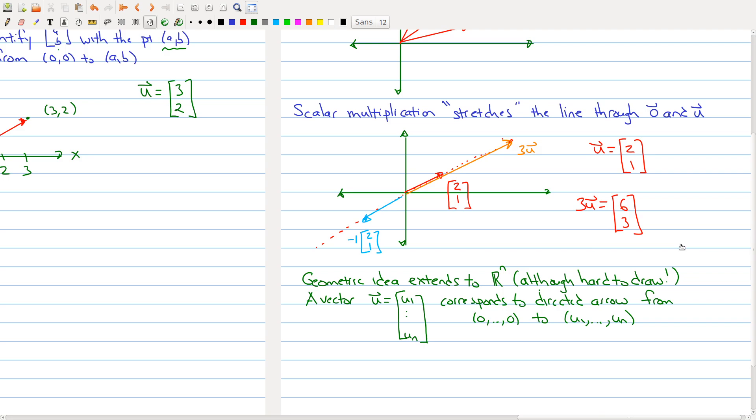The problem is it becomes extremely hard to draw, partly because it's really hard to visualize 4 space, 5 space, and so on. But you can kind of see what is happening is that we would be taking a vector u, and a vector u now because it's a vector in Rn would have n different entries. And we could think of that as corresponding to the point u1 through un in Rn. And this vector would correspond to a directed arrow from the origin to this particular point.